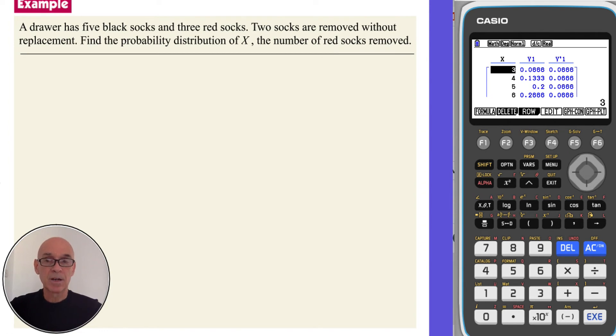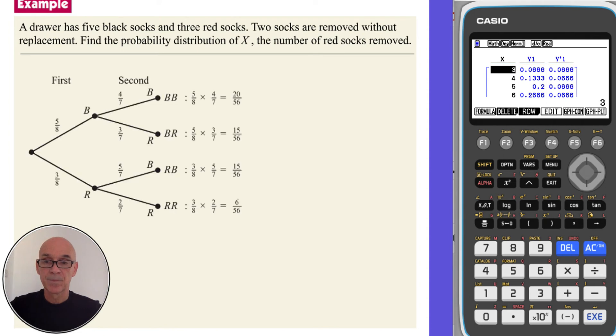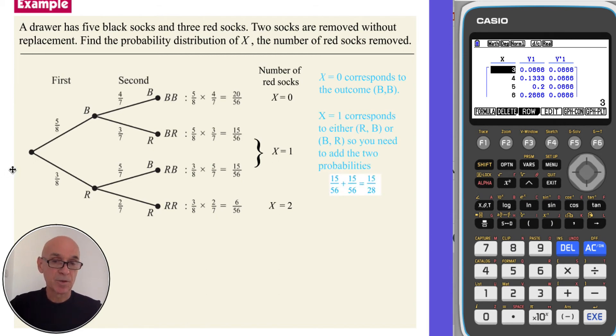In this question, again, we're asked to find the probability distribution of X, the number of red socks removed. So if we start by drawing a tree diagram, and showing the outcomes and the associated probabilities. And if we define X as the number of red socks, we notice that X can either equal 0, 1, or 2 again. X equaling 0, corresponding to the outcome of two black socks. X equaling 1, corresponding to either a red and a black, or a black and a red.